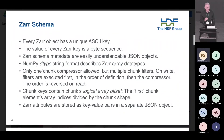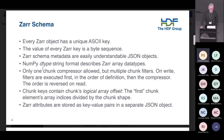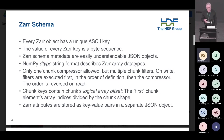The Zarr schema is designed to be simple so that any scientist can easily understand and use it. Every Zarr object has a unique ASCII key, and the value of that key is some kind of sequence of bytes — that's basically the fundamental property of the Zarr schema. The Zarr schema metadata is JSON, and the content of that JSON is deliberately made to be very easy, very verbose. Even non-experts in file formats can look at it and understand what it means. Because of its Python heritage, the Zarr schema metadata about data types follows the NumPy type format.